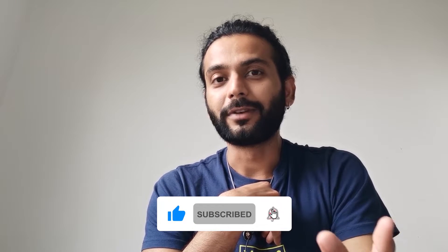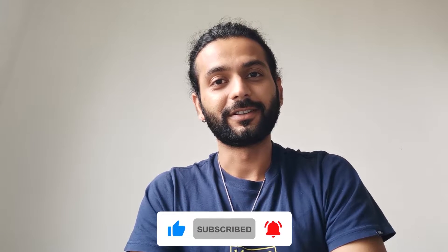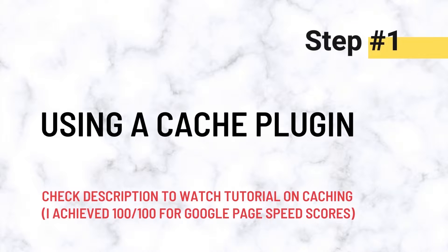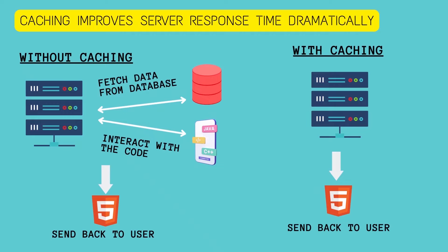The first thing: if you're using WordPress, use a cache plugin. When you use caching, WordPress already has HTML pages saved on the server, and they're directly served to users instead of processing all the PHP code, database operations, and other things. Caching has two important parts: first is page caching, and second is database caching.